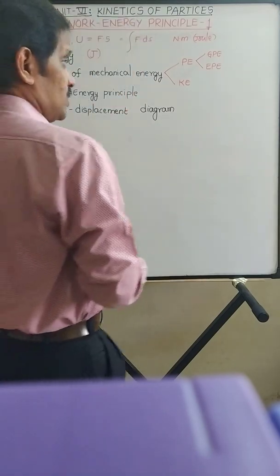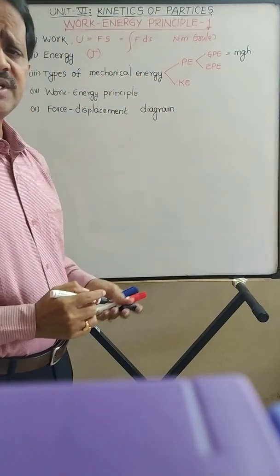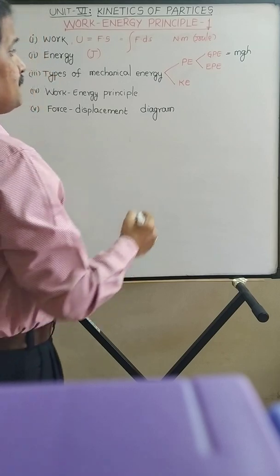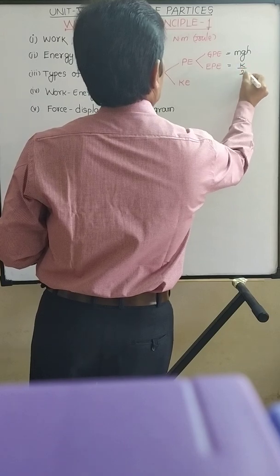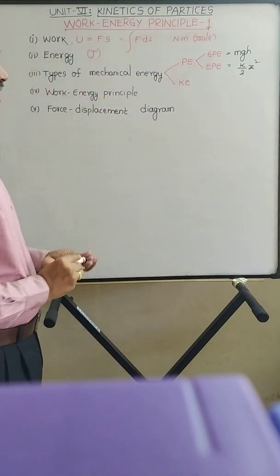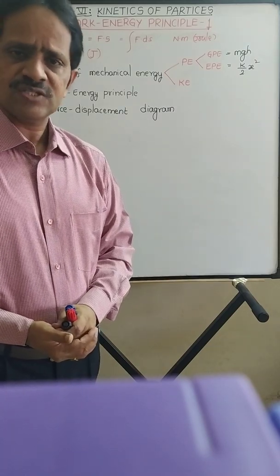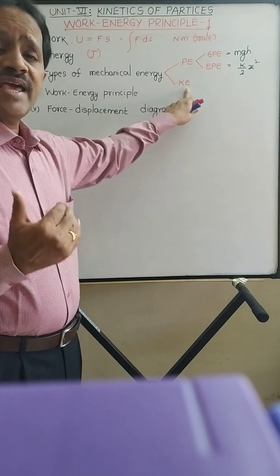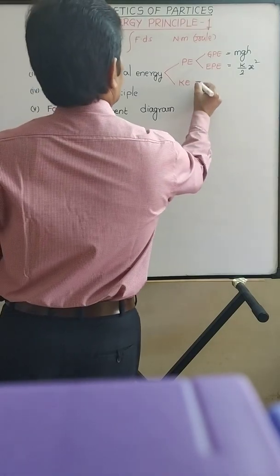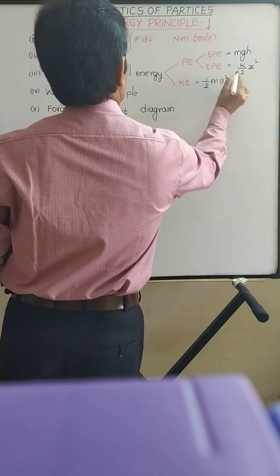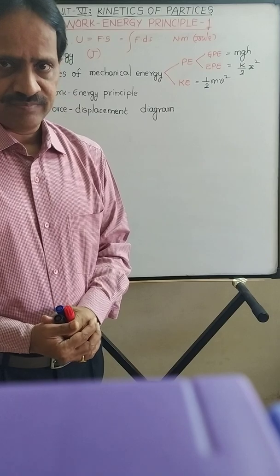Gravitational potential energy is given by MGH, where MG is the weight of the body, that is the gravitational force. Elastic potential energy is given by (K/2)·X², where K is the stiffness of the spring and X is the deformation of the spring. Kinetic energy is the energy possessed by the body due to its motion or velocity, and it is given by (1/2)·MV², where M is the mass of the body and V is the velocity of the body.